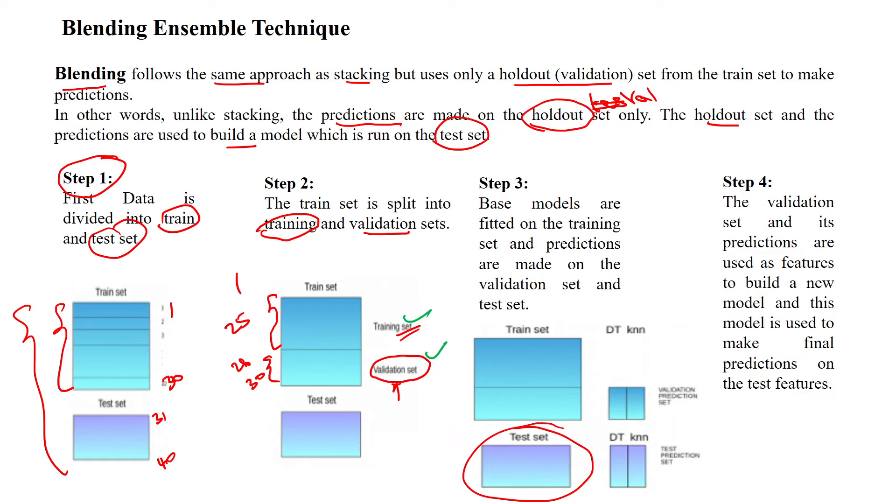Then we are training the model by using training samples and we will validate that by using the k-fold cross validation, k-fold cross validation to validate this, validate the performance of this model. Then finally, this test data set will use to test the model's performance. So that is about the blending ensemble technique. Thanks for watching.